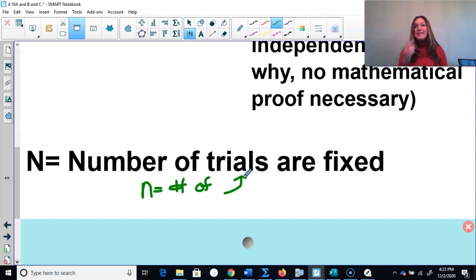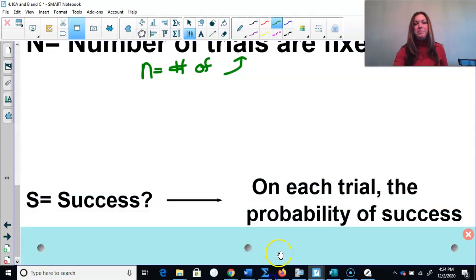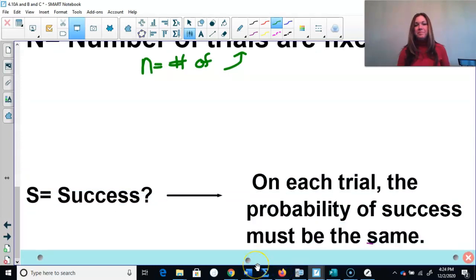Next is S. S stands for success. The probability of success is the same for each trial. For example, if I flip a coin, the probability of flipping heads will be 50% each time I flip that coin. BINS - this is how we can tell if something is a binomial setting. Now let's practice together. Let's go through some scenarios here and decide, is it a binomial setting or not?